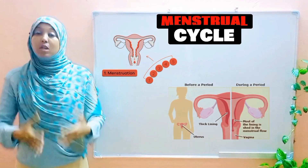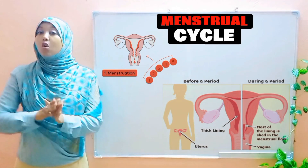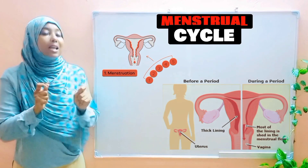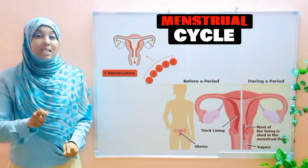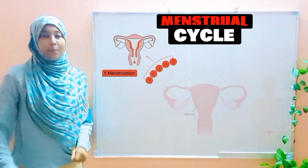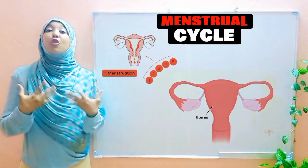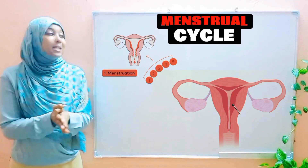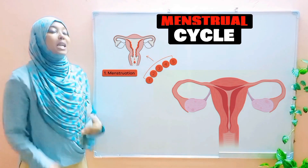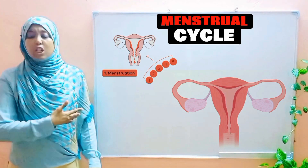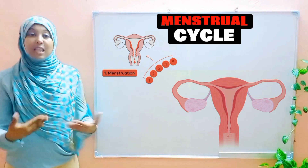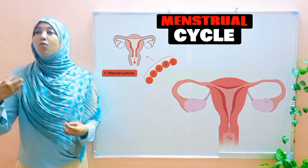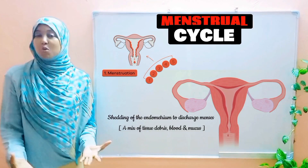Before menstruation happens, your body prepares for implantation by thickening the inner lining of the uterus, known as the endometrium. When fertilization does not take place, the endometrium is broken down and shed from the body. This tissue, along with blood and mucus, is what comes out as menses.